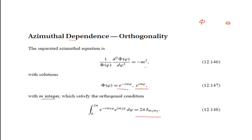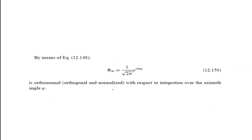Using this orthogonality condition, you can normalize the function Φ(φ). The normalized function φ_m equals (1/√(2π)) e^(imφ), where 1/√(2π) is the normalization constant. This function is orthonormal with respect to integration over the azimuthal angle φ. Orthonormal means orthogonal plus normalized.